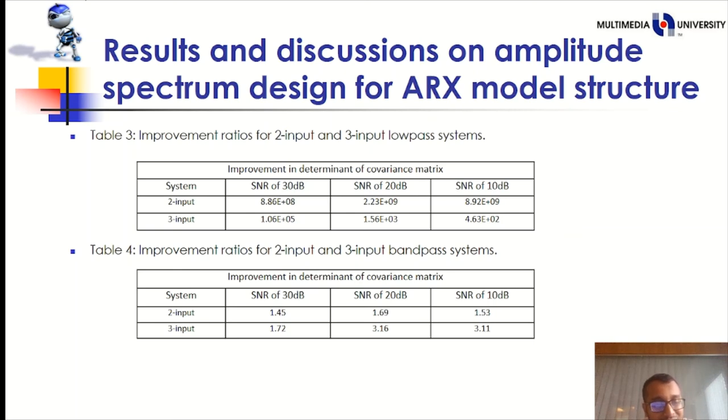Table 3 is the improvement ratio for two input and three input lowpass system. And table 4 is the improvement ratio for two input and three input bandpass system. Where we can see that the improvement ratio based on the determinant of covariance matrix is good for the bandpass system and very good for the lowpass system.